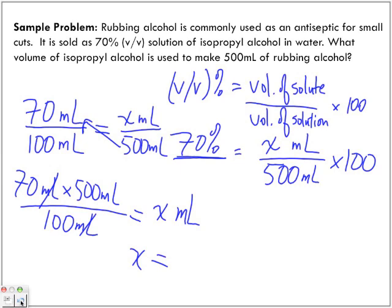What is our unknown? 350 milliliters. So, we have 350 milliliters of the isopropyl alcohol, because it's the isopropyl alcohol that is dissolved in water.